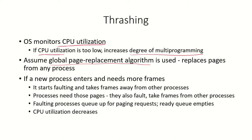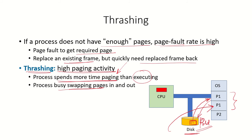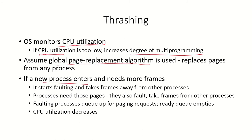Global page replacement means that if a new process is being brought in, it can take frames from any other process — frames allocated to P1 or P2 — and a new process P3 will be brought in. If the new process needs more frames and global page replacement is being used, the new process will also start faulting and will take frames away from all the other existing processes, causing those existing processes to also start faulting and take frames from others.